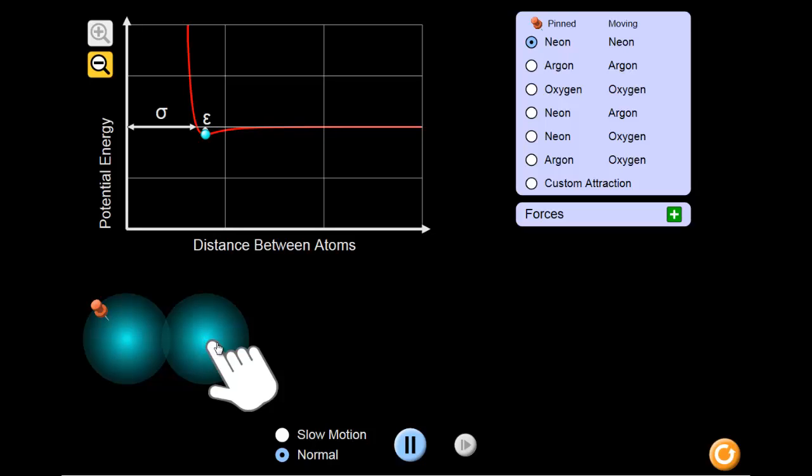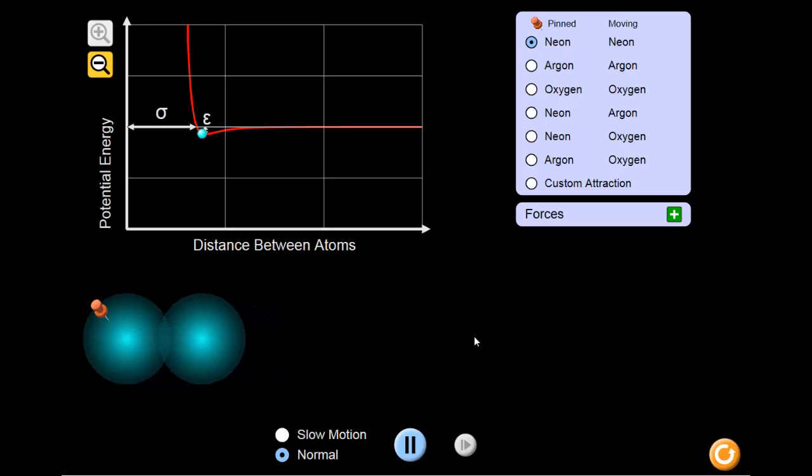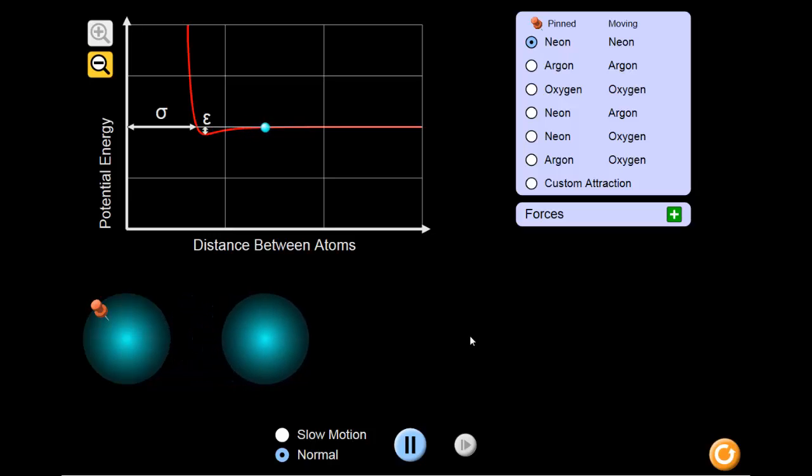Let's see what happens when we move the atoms apart and then allow them to move freely. As you can see, the atoms will move toward each other slowly, speed up, and then seem to bounce off each other.